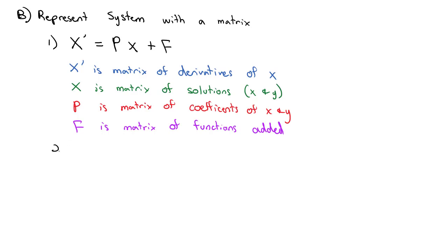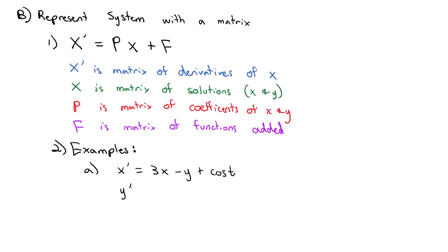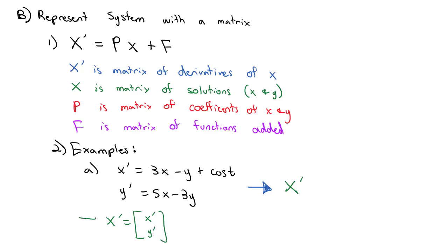Let's look at an example. Suppose we have x' = 3x - y + cos(t) and y' = 5x - 3y, and we want to convert it to matrix form. We'll use capital bold X' to represent the matrix [x'; y'] — it's a capital bold X prime to show it's a matrix of derivatives, not just the derivative of x.